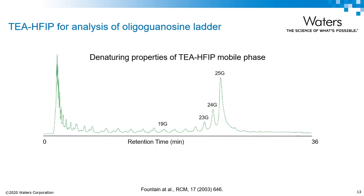One of the major factors that we need to consider is whether or not we should use a denaturing mobile phase. In the case of G-rich oligonucleotide sequences, they're known to form very stable inter- and intramolecular structure, which can make analysis by reverse phase challenging. Generally, either a really high pH or a high temperature is required for analysis. However, because TEA-HFIP is an effective denaturant, you can see that in this case we have length-dependent retention.